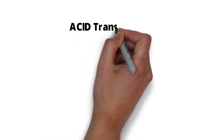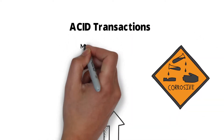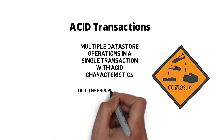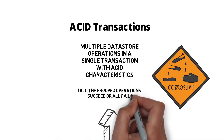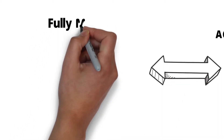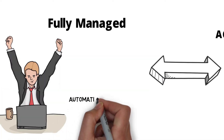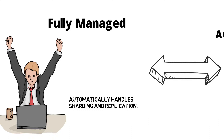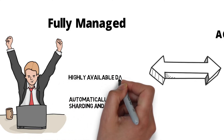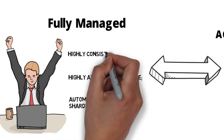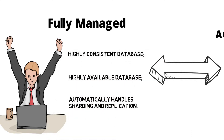ACID transactions are another key feature. We support multiple Datastore operations in a single transaction with ACID characteristics — all the grouped operations succeed or fail together. Database entities are fully managed, with automatic handling of sharding and replication, meaning the database is highly available and kept highly consistent. The beauty of Datastore is it maintains all sharding, availability, and consistency itself.